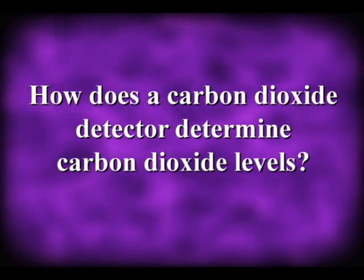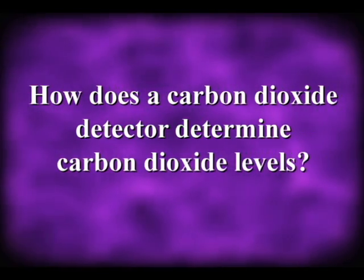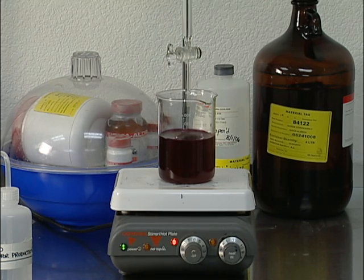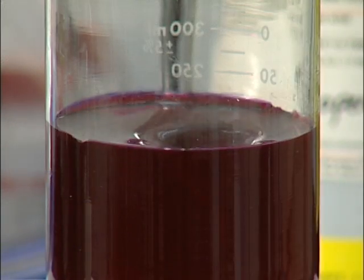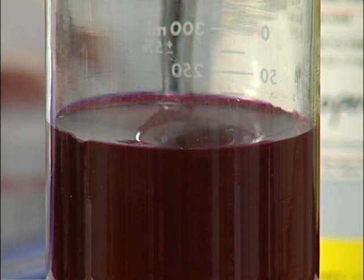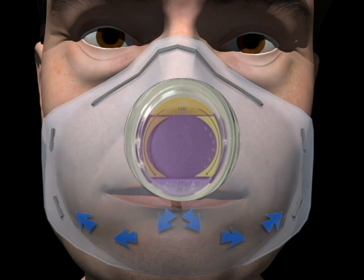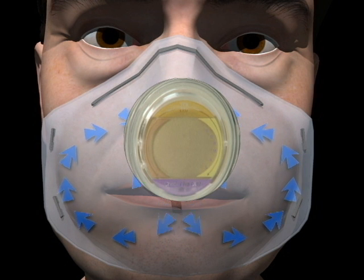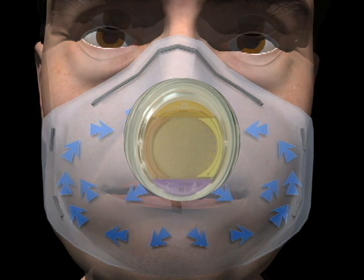How does a carbon dioxide detector determine carbon dioxide levels? The detector's chemistry includes a pH sensitive dye that actually changes color based on the pH of the indicator. The carbon dioxide in the exhaled breath will react with the chemicals in the device and forms a mild acid that drops the pH and changes the color of the indicator. The more carbon dioxide present, the more acid is formed, the lower the pH will go and the further the color changes.